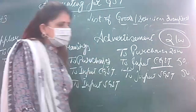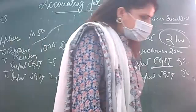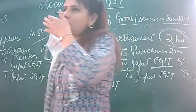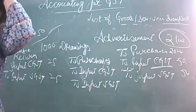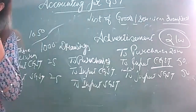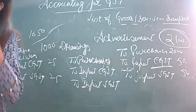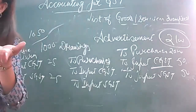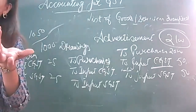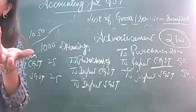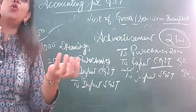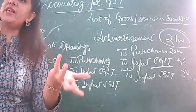That case is done. Next: goods lost or stolen. What is lost as stolen? Yes — goods lost by accident or lost by theft. The entry is: lost by theft account debited to purchases, to input CGST, to input SGST.